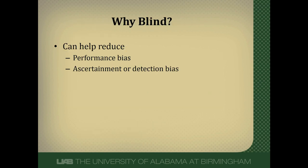Blinding is very important because it can help reduce those things we just discussed, which we call performance bias and ascertainment and detection bias. Performance bias refers to systematic differences between groups in the care that's provided. For example, if researchers know what study arm somebody is in, they may provide different ancillary treatments to one group, offer different testing, or do different follow-up — not based on the protocol, but purely based on knowledge of the group assignment.